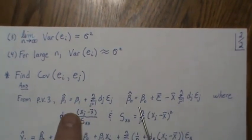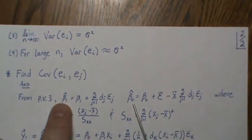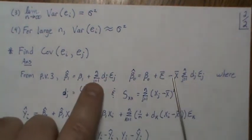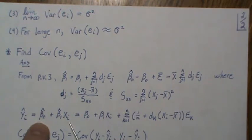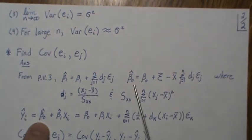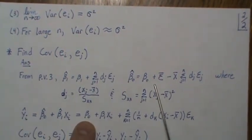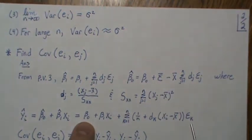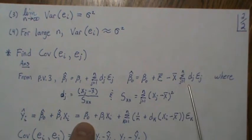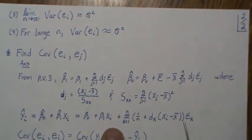We rewrite the fitted line using these expressions: β̂₀ is substituted in, giving a sum of the epsilons divided by n; the x̄ term, the d term appear because they're in both. The sum is factored out, and we arrive at the rewritten fitted line.